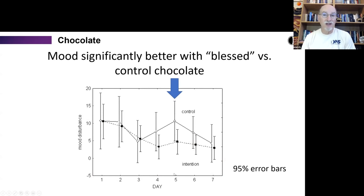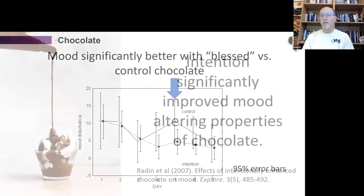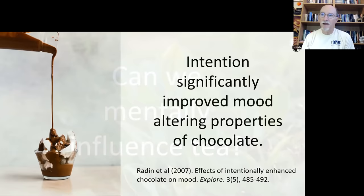In the evening of every day, they record their mood. So this is the result that we got. Here's the seven days, the three days of eating chocolate, three, four, and five. We predicted that if there was going to be an effect, it would show up probably most likely on the third day of eating chocolate, which is this day here. These are 95% error bars. You can see the plants and that people getting the treated chocolate, which is this one, this is treated chocolate, this is the control. This is in terms of mood disturbance. So there's more mood disturbance or poorer mood for people getting the control chocolate and better mood for people getting the treated chocolate. So that's what we had predicted. And that's what we got significantly. So intention significantly improved the mood altering properties of chocolate.